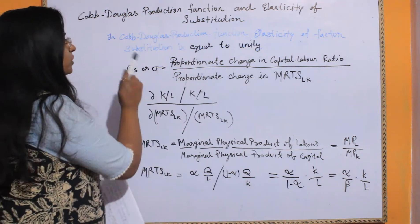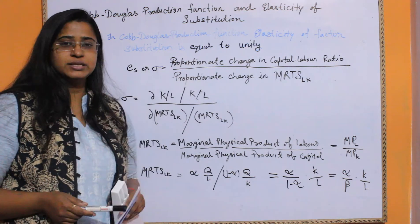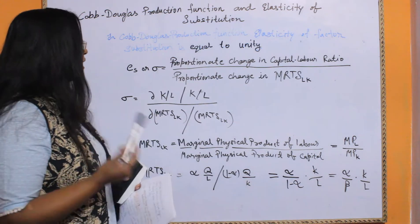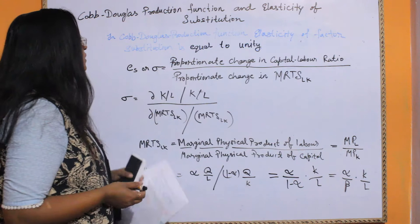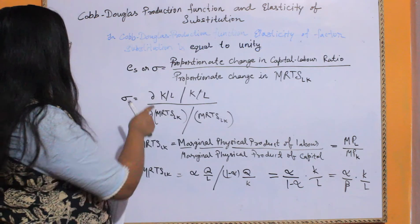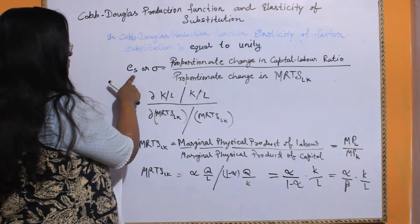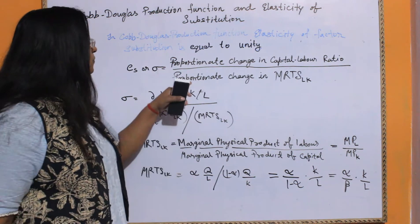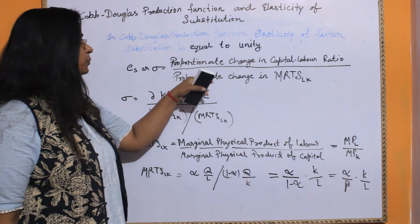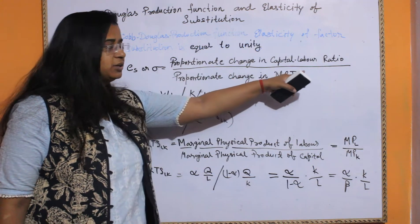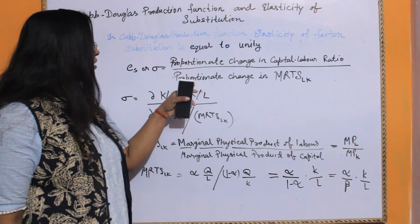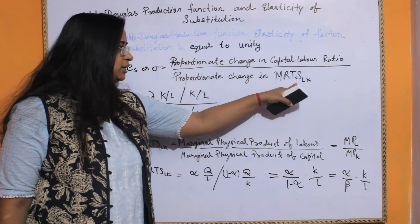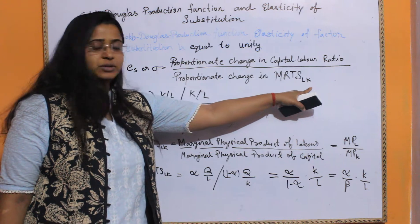In Cobb-Douglas production function, elasticity of factor substitution is equal to unity, symbolized by sigma. The formula for this is the proportionate change in the capital-labour ratio divided by the proportionate change in the MRTS of labour for capital.